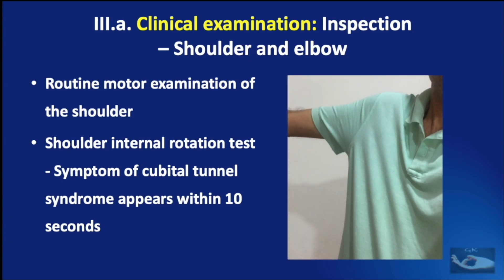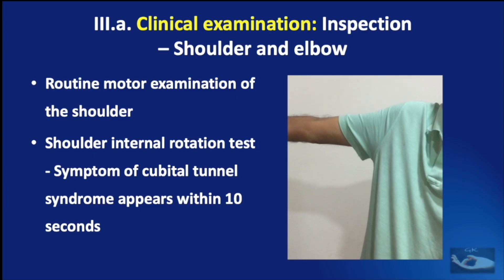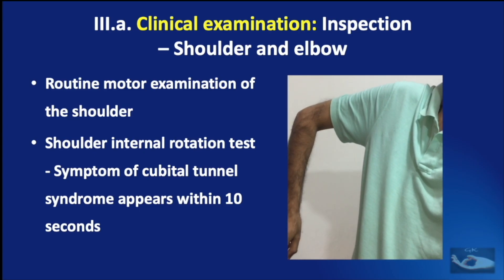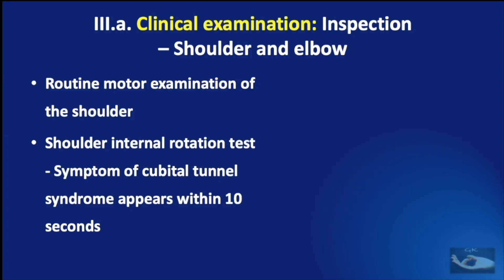For the shoulder internal rotation test, the patient is asked to place the shoulder at 90 degrees abduction with complete internal rotation, the elbow kept in 90 degrees flexion with complete supination, and the fingers and wrist extended. If symptoms of ulnar nerve involvement such as pins and needles sensation in the fingers appear within 10 seconds, it indicates compression of the ulnar nerve at the cubital tunnel.